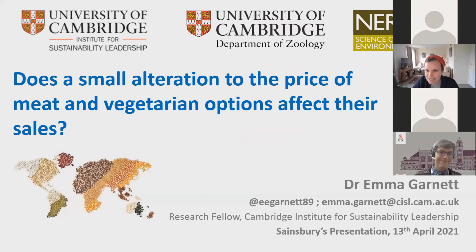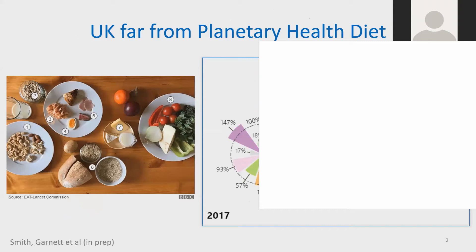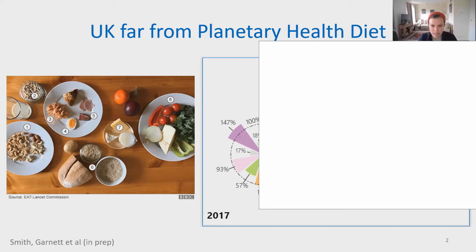Good morning everyone. My name's Emma Garnett. Today I'm going to be talking about one of the chapters from my PhD, which was funded by NERC. The question is: does a small alteration to the price of meat and vegetarian options affect their sales? The UK diet is not very sustainable. The planetary health diet recommends mostly plant-based with small amounts of meat, fish, and dairy. We're eating in the UK about 680% of the recommended red meat intake — that's beef, lamb, and pork. We're eating more tubers, eggs, chicken, and dairy, and only about 18% of the recommended nuts and legumes intake.